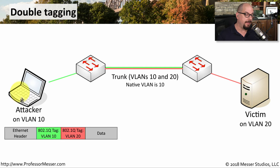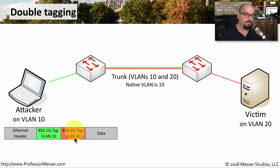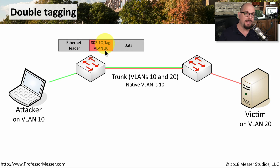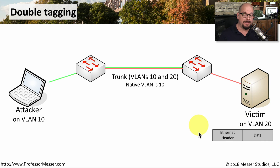Here's how double tagging works. We have an attacker's computer on VLAN 10 and a victim computer on VLAN 20. Normally these two devices would not be able to communicate directly — they would have to go through a router at the very least. But by using double tagging, we can hop through both switches and have our data end up on a different VLAN. The ethernet frame has two tags: one for VLAN 10 and one for VLAN 20. The first switch evaluates and removes the VLAN 10 tag, and the remaining frame still has the VLAN 20 tag, so it's sent across the trunk to VLAN 20. That second switch performs the normal tag removal and sends the data down to the victim's workstation. Any data from VLAN 10 should not appear on VLAN 20, but this double tagging attack allows the attacking device to send information directly to the victim.